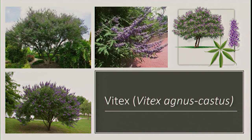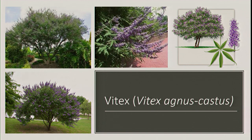Next is vitex, or chaste tree — Vitex agnus-castus. This tree is palmately compound in leaf pattern, has very pretty purple blooms, and is more of a shrub and ornamental tree. It grows fairly wide but not too tall. Pollinators love this tree — we have a lot at our tree farm and the bees absolutely love our vitex. Purple blooms, palmate compound leaves, and the overall shrub-like structure are all dead giveaways.